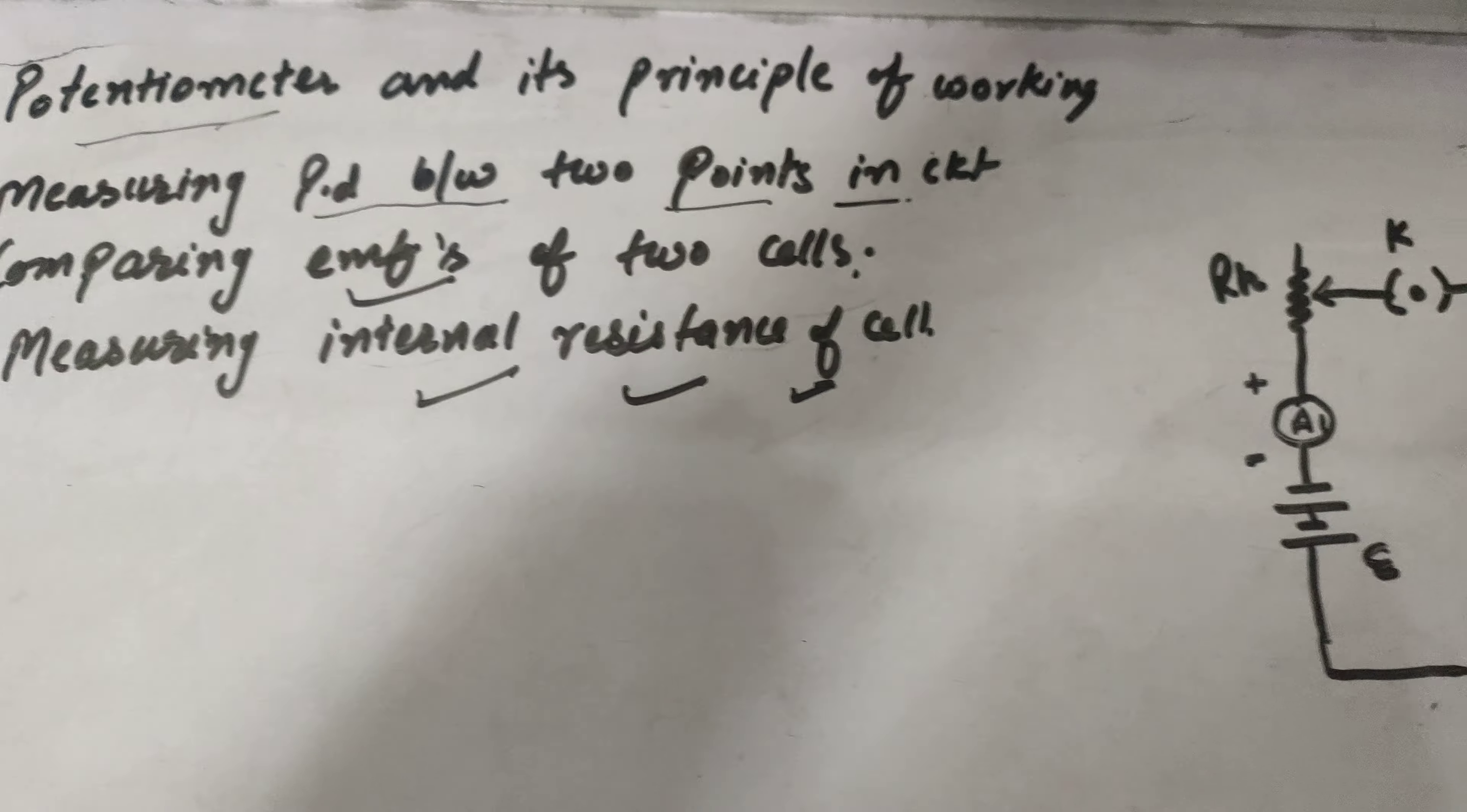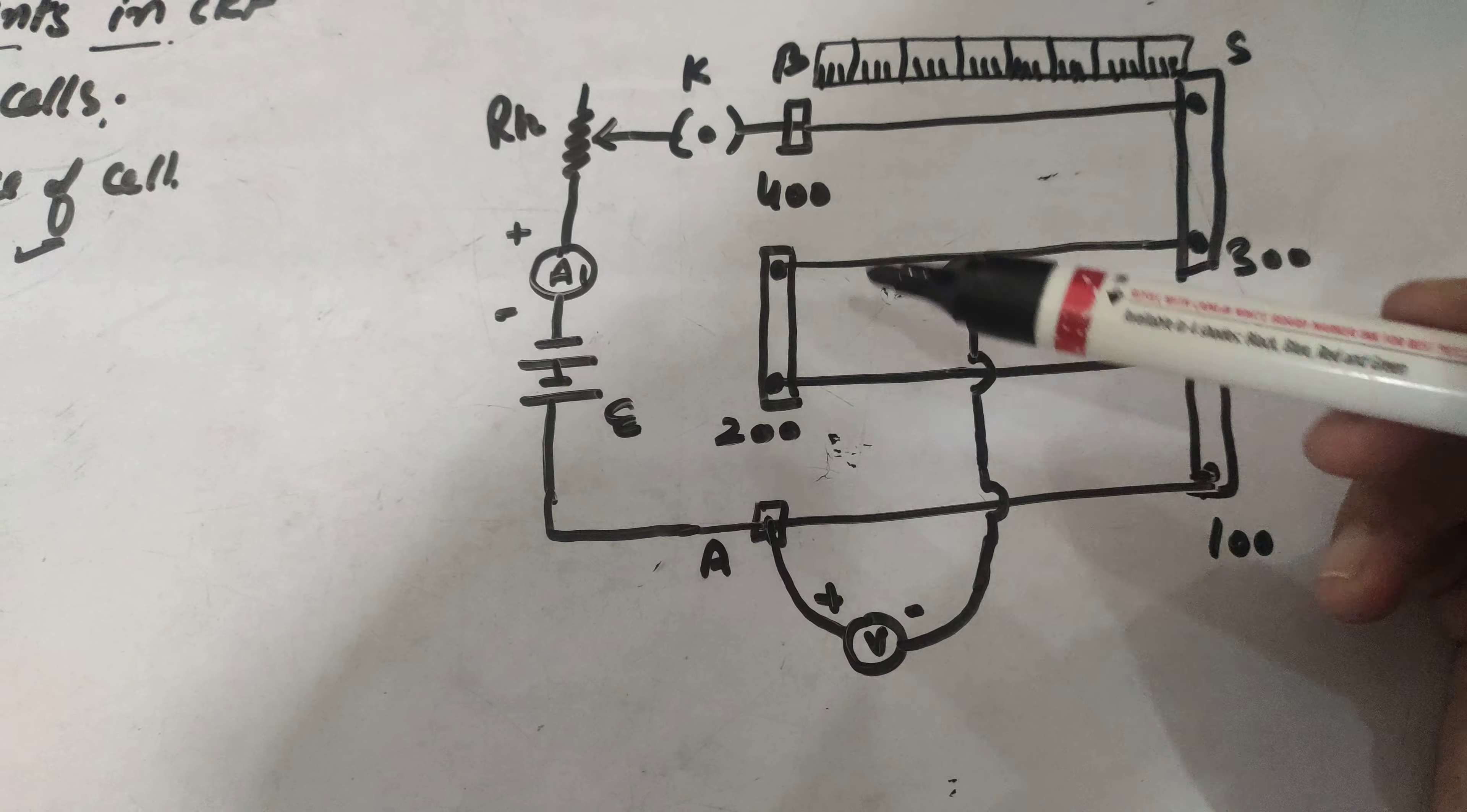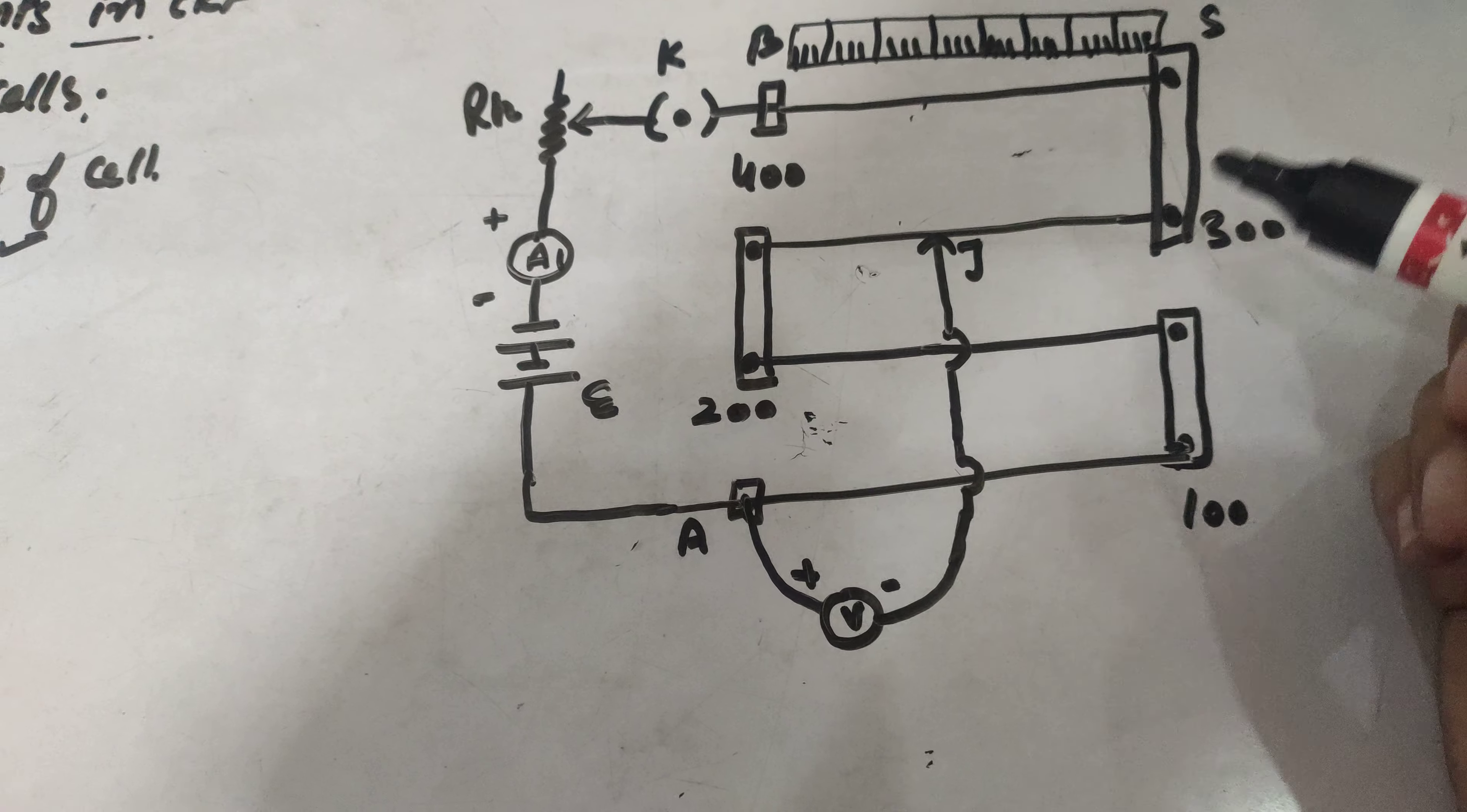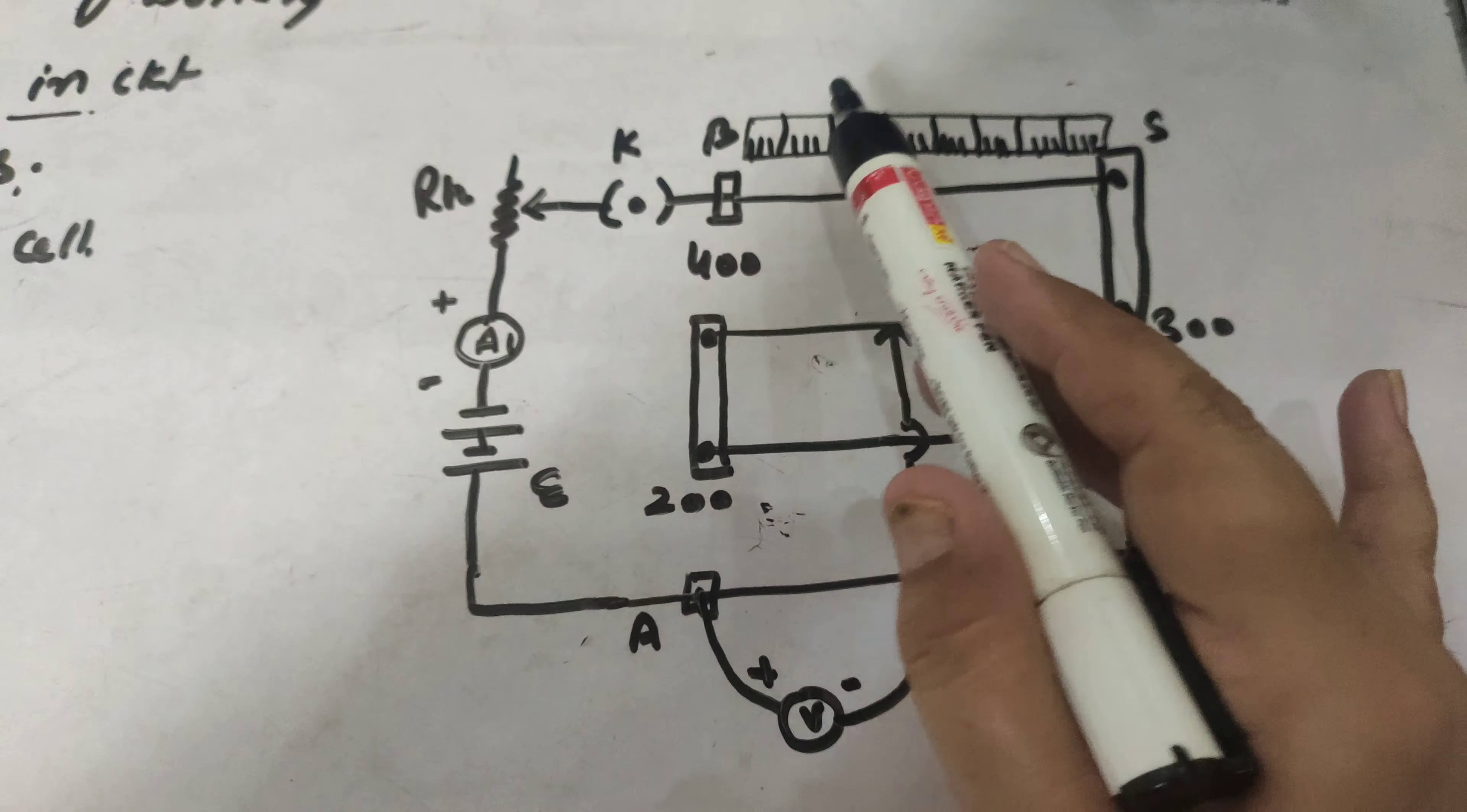The setup used for potentiometer is as shown. This is also one of our experiments for class 12. Here there are four wires, four hundred centimeter wires or more can be used, which can be connected in series, and this is a meter scale.